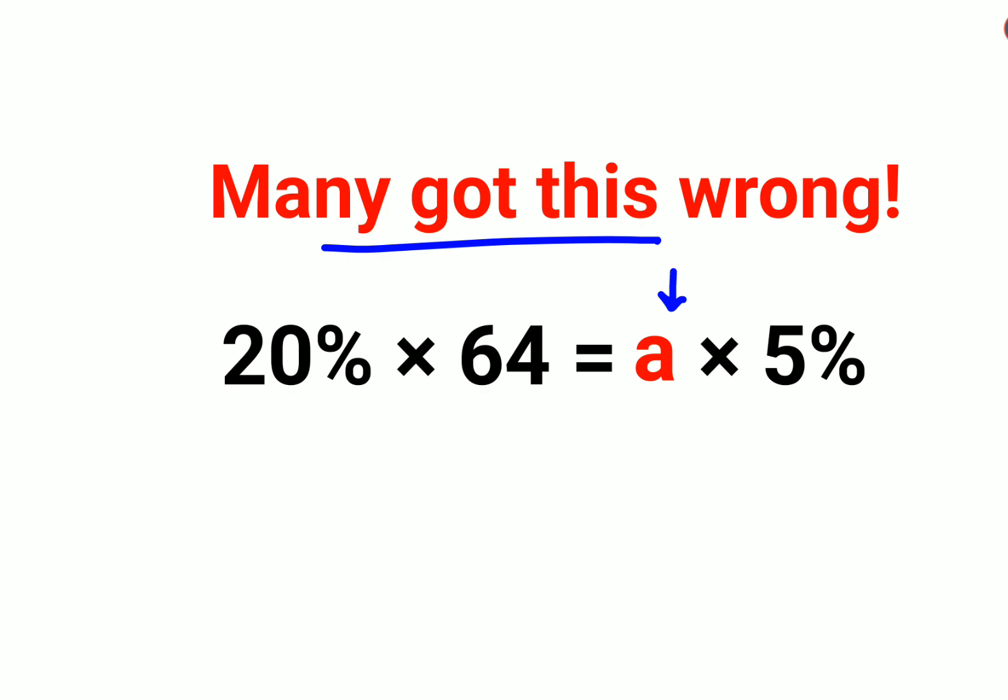So the question over here we have is 20% × 64 = A × 5%. So now understand, whenever you have a percent sign ahead of a number, while calculating, you can convert this into a fraction by dividing the number by 100.